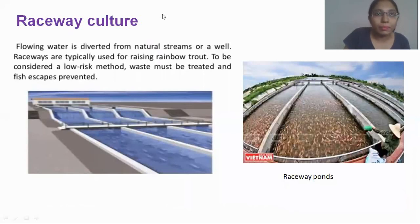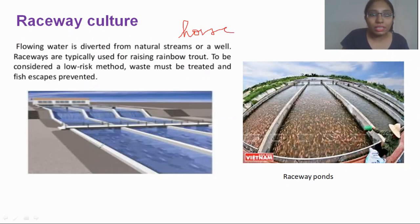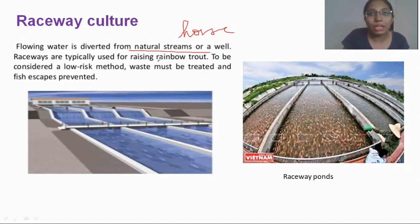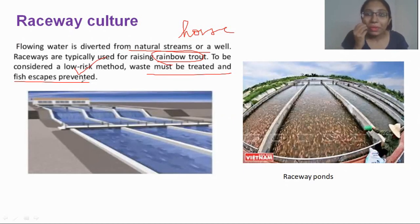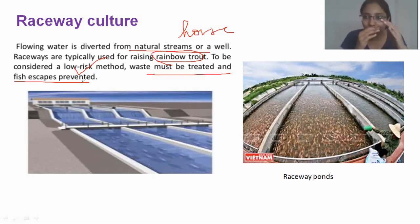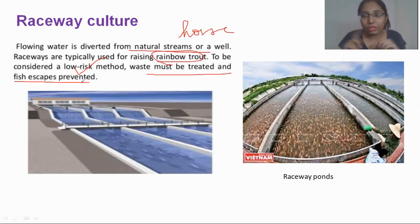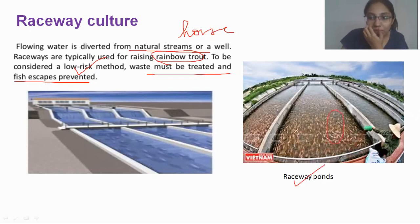Next, we have raceway culture. Imagine it like a horse race track — you can see it is a race-track-like system. They have diverted natural streams so they flow through a raceway, and these are used for growing fish. For example, rainbow trout is mainly grown using the raceway method. It is low-risk, waste must be treated, and fish escape is prevented because there is a perimeter on all four sides. Unlike cage and pen culture, which are in direct contact with open water bodies, raceways are not, so there are fewer chances of fish escaping.